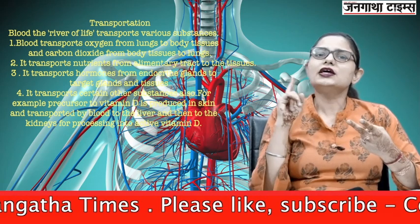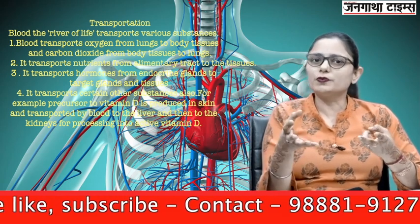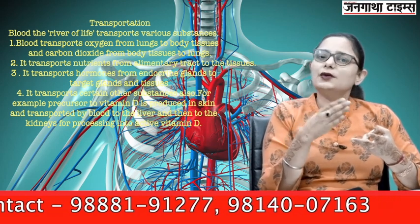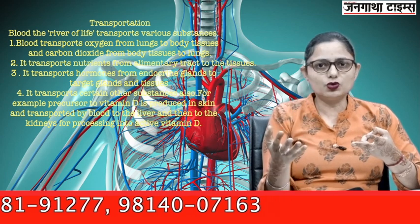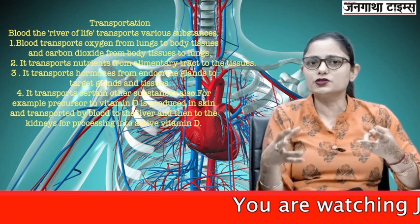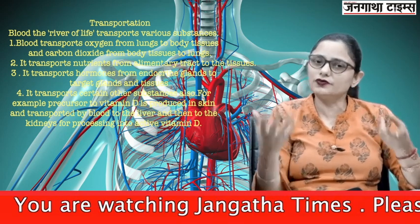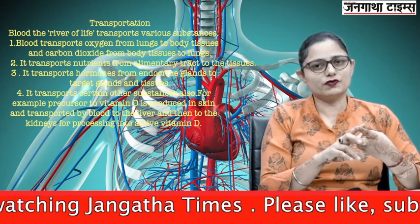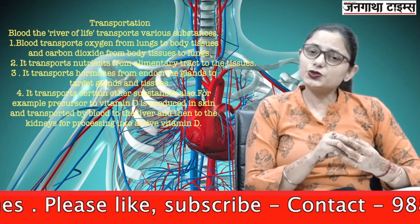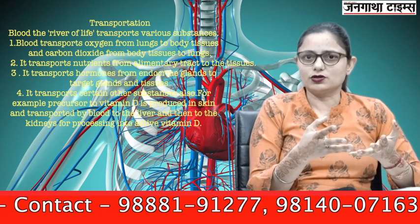Second, it transports nutrients from the alimentary tract. All the nutrients absorbed in the small intestine and the whole alimentary tract — like amino acids, glucose, other carbohydrates, vitamins, and minerals — are transported by blood to the liver and different tissues of the body. Third, it transports the waste products of cellular metabolism from various tissues to the excretory organs.